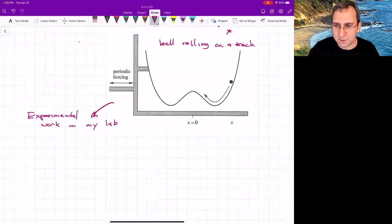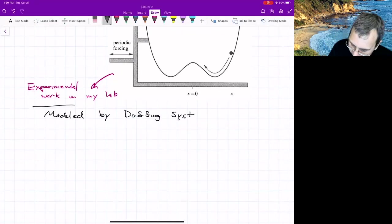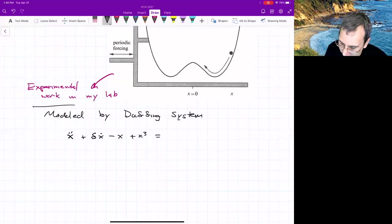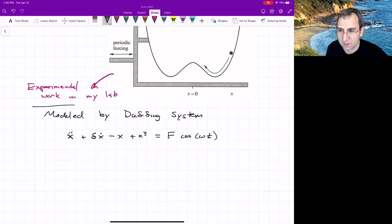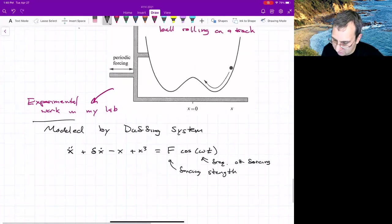And there's a model for this, the duffing system. Duffing did some work on this. So it looks like X double dot plus delta X dot minus X plus X cubed equals, and on the right-hand side, we have forcing, the time-dependent forcing, cosine omega T. So F is the forcing strength. This is the frequency of forcing omega. And it's just like this.